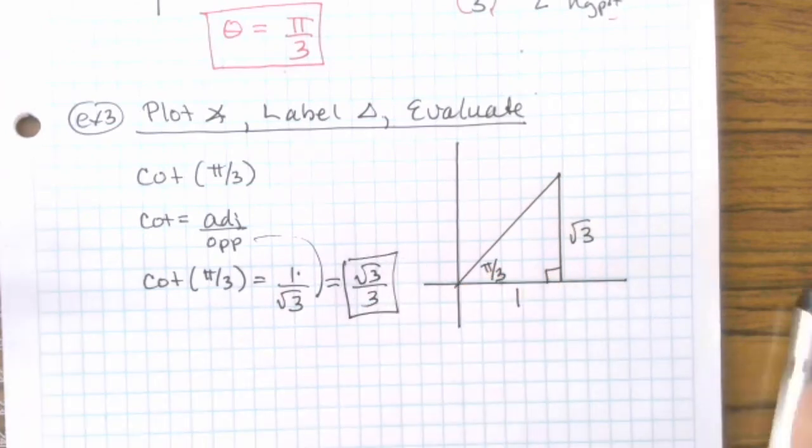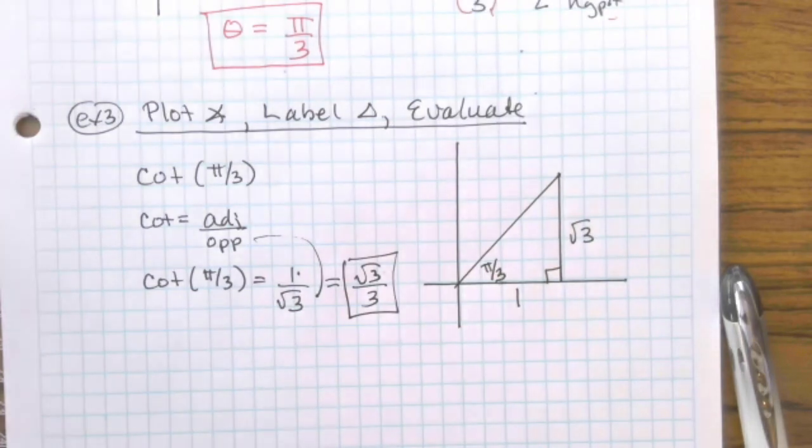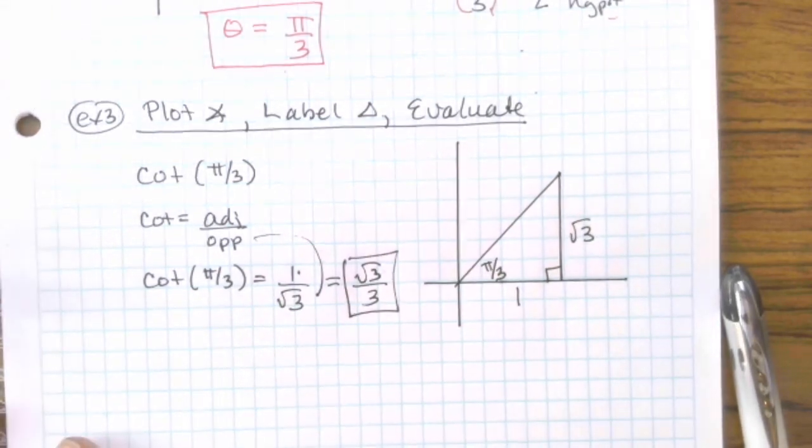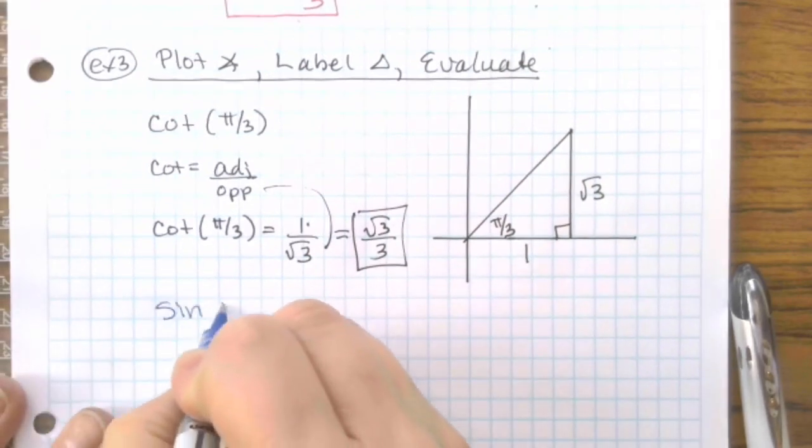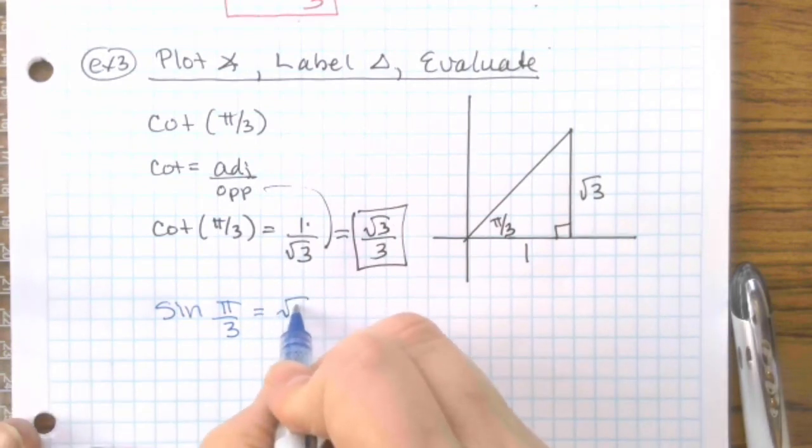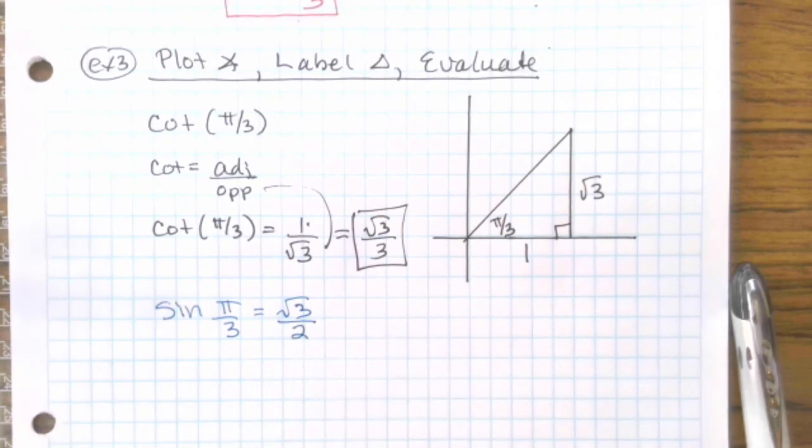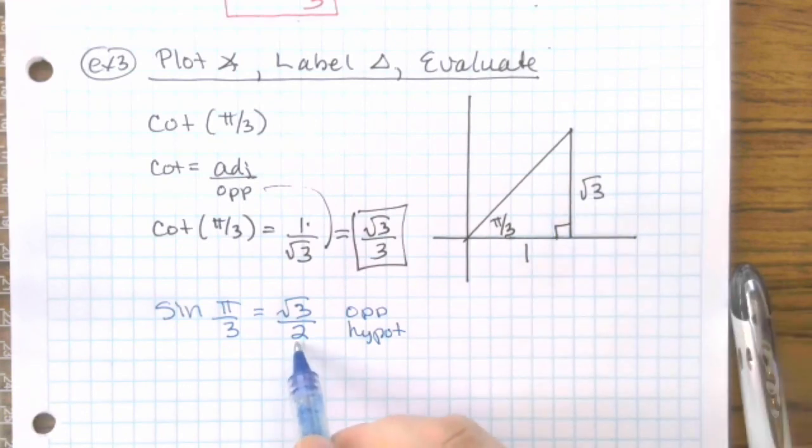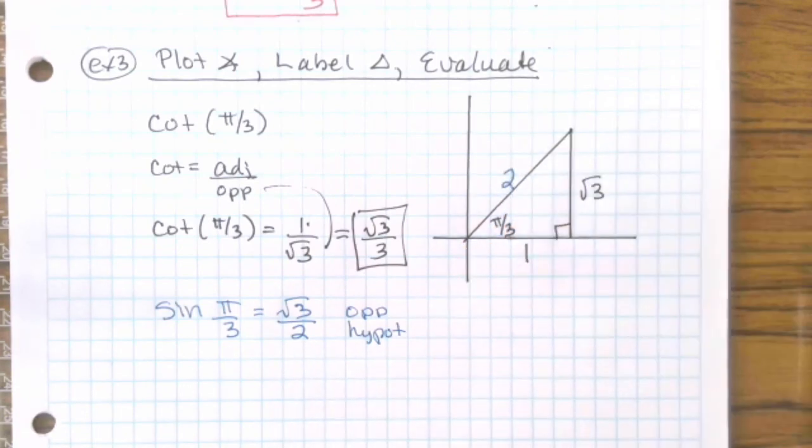So we want to pick a different function that uses the hypotenuse. Probably sine would be just as easy. So sine of π/3 is equal to radical 3 over 2. And sine is opposite over hypotenuse. So opposite is radical 3, which means the hypotenuse is 2. And that's how you get the third side is by using a different trig function to actually evaluate.